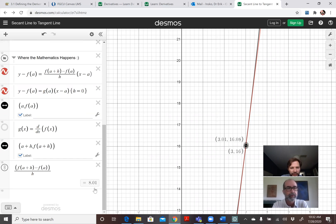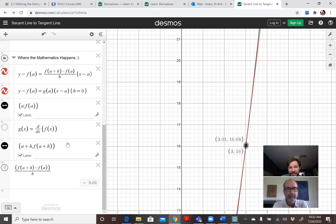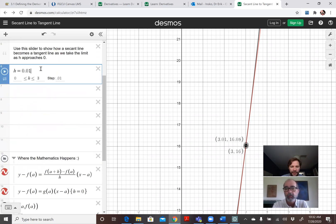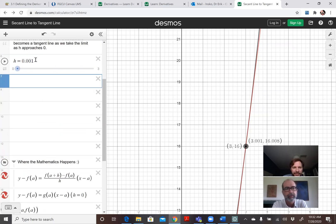Yeah, and if I plug in 0.01, then I get 8.01, so that's getting really close to 8. And I wonder if I can go even further. It just keeps getting closer and closer to 8. But if I plug in 0, what happens? That's the other thing to know.